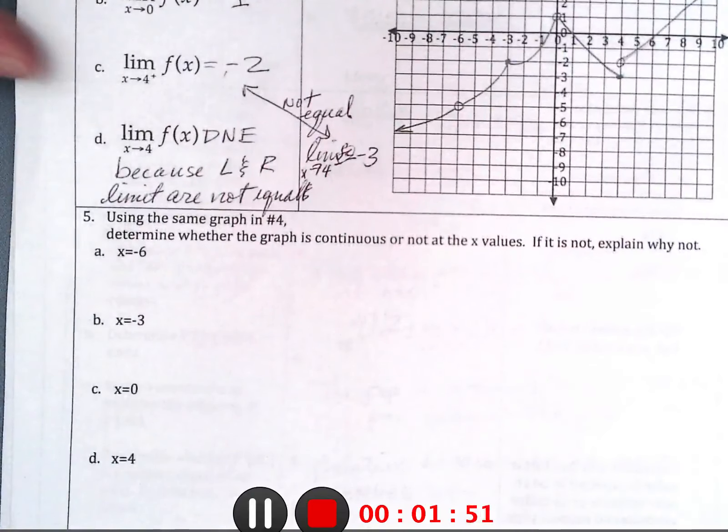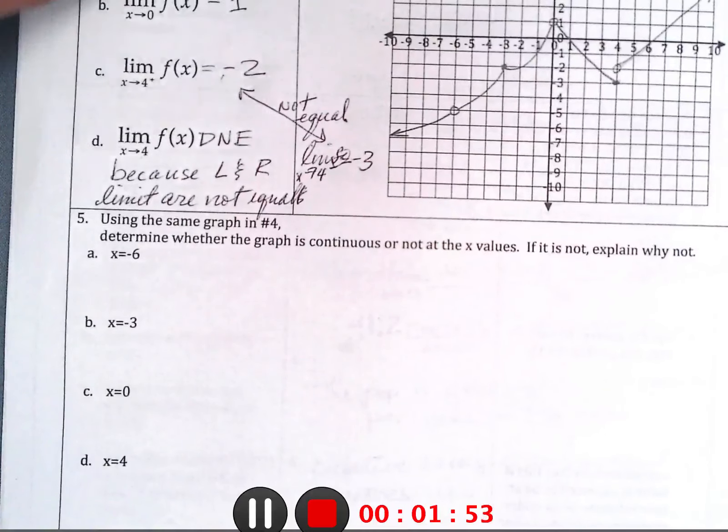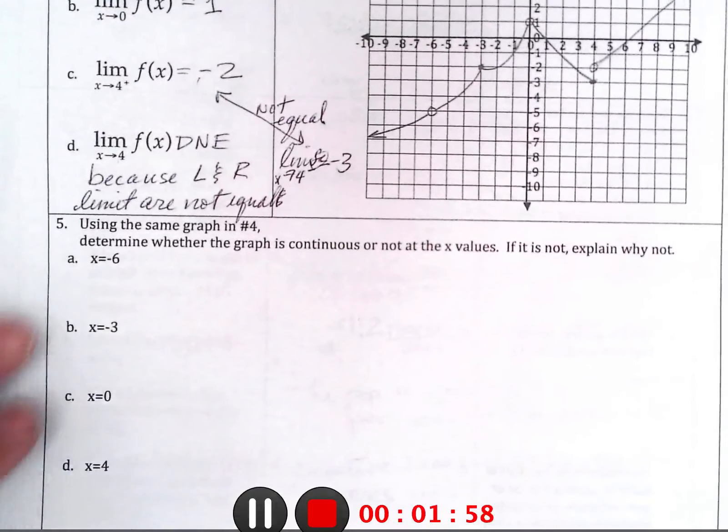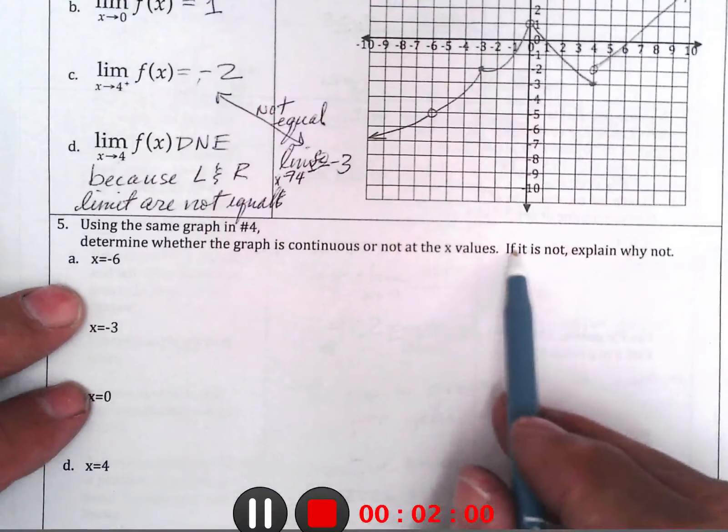Now it says, looking at that same graph, determine whether it's continuous at these places or not. If not, explain why not. Well, at negative 6, to be continuous, it has to satisfy three rules.